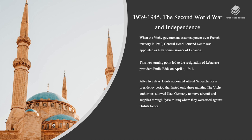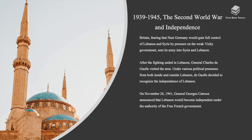When the Vichy government assumed power over French territory in 1940, General Henry Fernand Dentz was appointed as high commissioner of Lebanon. This led to the resignation of Lebanese president Emile Eddé on April 4th, 1941. Dentz then appointed Alfred Naccache for a presidency that lasted only three months. The Vichy authorities allowed Nazi Germany to move aircraft and supplies through Syria to Iraq, where they were used against British forces. Britain, fearing Nazi Germany would gain full control of Lebanon and Syria, sent its army into Syria and Lebanon.